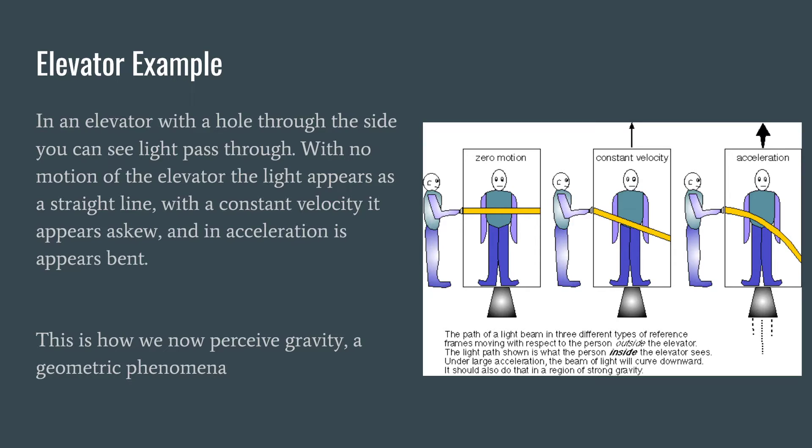Now in the terms of acceleration, light would look bent, because you were moving fast enough, the light would not even come close to the hole and it would end up going to the ground. If you're going fast enough you would be able to see a parabolic curve from where the light entered the elevator all the way down to the point on the ground. This is now how we perceive gravity, which is as a geometric phenomena, rather than just a pull that everything has.